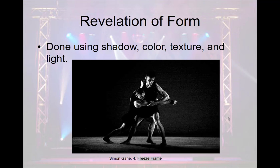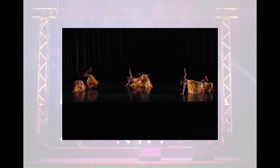Lighting also reveals the form, done using shadow, color, texture, and light. We see this a lot in dance because we want to see the bodies — the human form moving, creating shapes, shadows, and diagonals, telling a narrative through physical form. In one example called Freeze Frame, and another at West Virginia University, we can see every inch of the bodies. Their faces are less important than their bodies in this context.